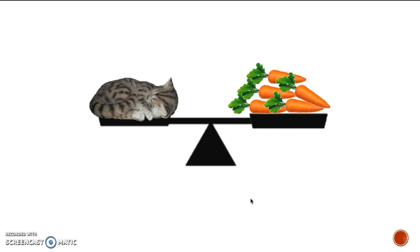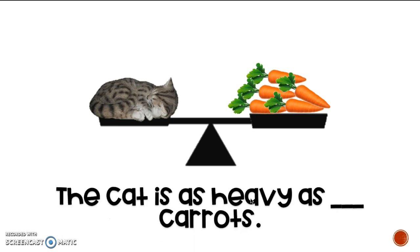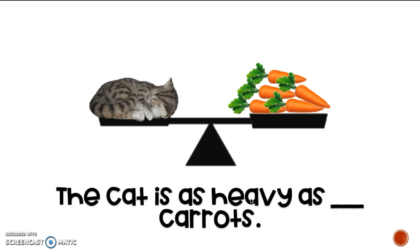So let's say I want to put that into a sentence. So I could say, the cat is as heavy as blank carrots. Friends, what number would I put in there to talk about how heavy my cat is compared to a group of carrots? Yeah, five. There are five carrots. So my whole sentence would be, the cat is as heavy as five carrots. Oh, cute kitty. I almost don't want to change this line.